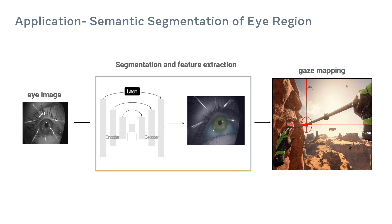Common features extracted after segmentation include the pupil boundary or centroid. The margins for error in this process are extremely slim. Consider that the position of the pupil centroid will span only a small portion of a low-resolution eye image, but its position is mapped onto a gaze field of view that may span as many as 100 visual degrees. This means a single pixel segmentation error would lead to large errors in the final gaze estimate.